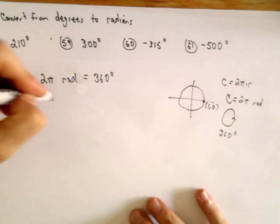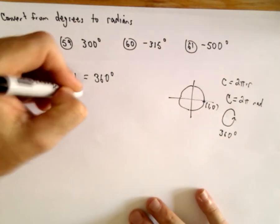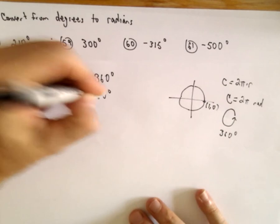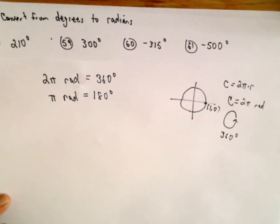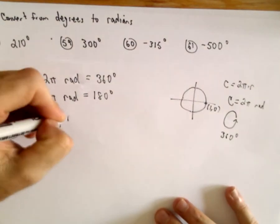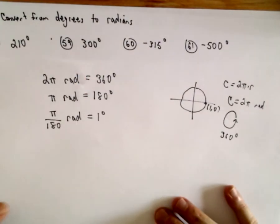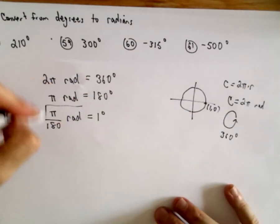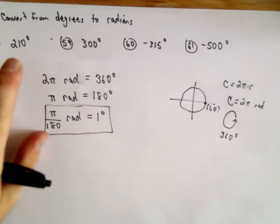If you divide both sides by 2, we get that pi radians is equal to 180 degrees. And now all I'm going to do is I'm going to divide both sides by 180. So it says pi over 180 radians is going to be equal to 1 degree. So this is going to be my little conversion formula I'm going to use.